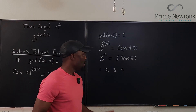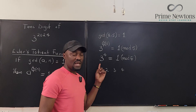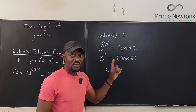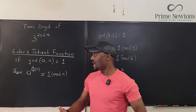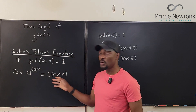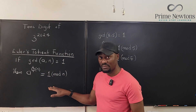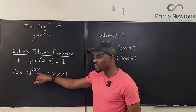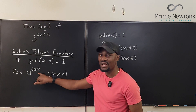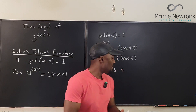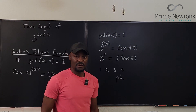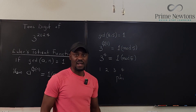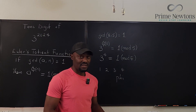Why is this true? Because 3 to the fourth is 81, and 81 divided by 5 has a remainder of 1. That justifies this example of Euler's totient function — this is what we call phi of n. Some people call it 'phi' but the correct pronunciation is 'fee'.